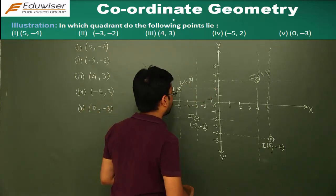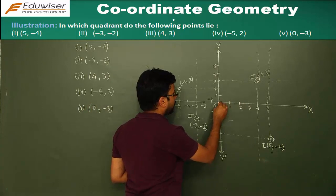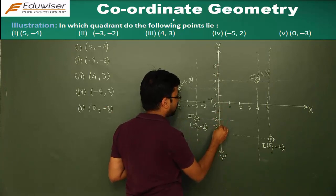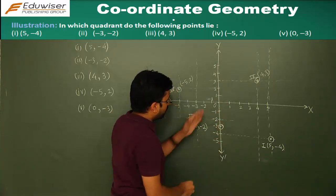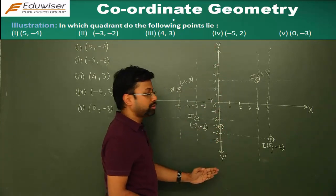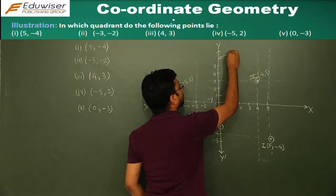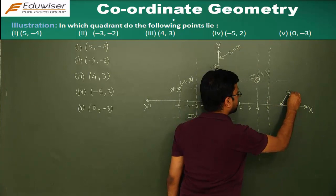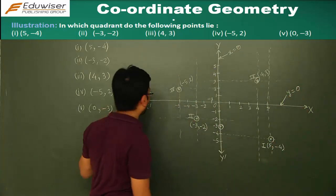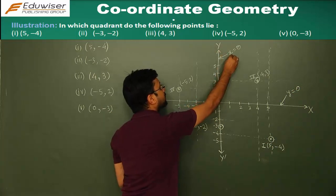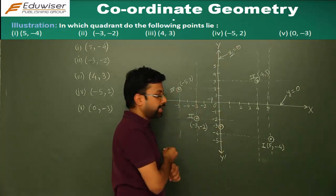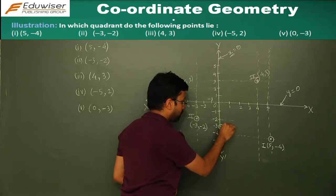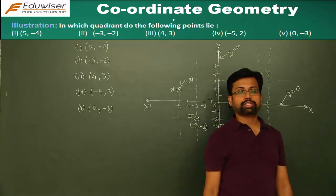The fifth point is (0, minus 3). For x you move here only — the line along the y-axis — and minus 3 would be here. The point of intersection is on this line. Along any point on this line the value of x is going to be 0. And for x is 0 and y equals minus 3, this is the fifth point that we needed to plot.